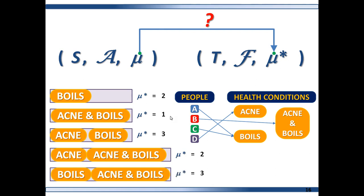You can pause this video and check these out. For example, 'acne and boils': acne is D (1 patient), boils is 2 patients, giving 3 total.